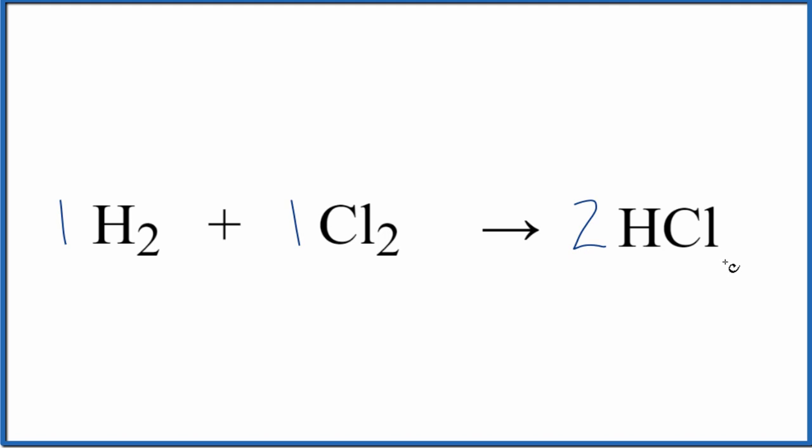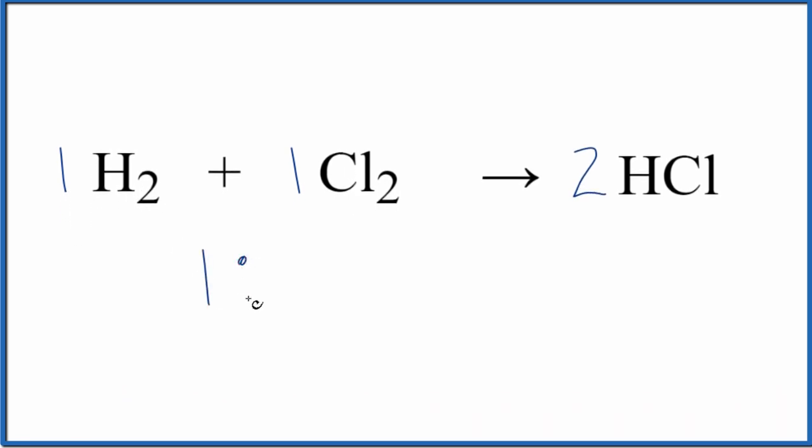This is our balanced equation, and we'll use this to find our mole ratios for H2, Cl2, and HCl. We could say H2 to Cl2 is just a 1 to 1 ratio, just looking at the coefficients there. Or we could say that Cl2 to HCl, that's a 1 to 2 ratio. And then we can use these ratios to solve stoichiometry problems.